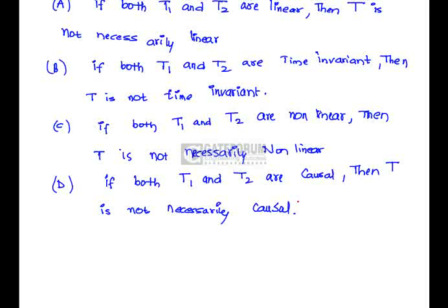It's not true because if both systems T1 and T2 are linear, the whole cascaded system leads to a linear system. Whereas Statement B: If both T1 and T2 are time invariant, then T is not time invariant.